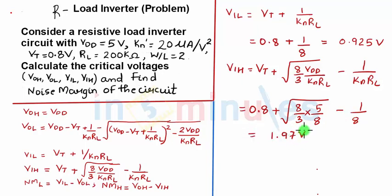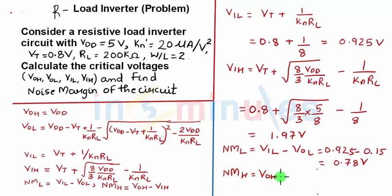So we have found out the four critical voltages. Let's quickly find out the noise margin. The equation of the same is also given. Low level noise margin is VIL minus VOL which is 0.925 minus 0.15. It was 0.147, I have approximated it to 0.15 which is equal to 0.78 V. And NMH noise margin high is equal to VOH minus VIH which is equal to 5 minus 1.97 which is equal to 3 V.